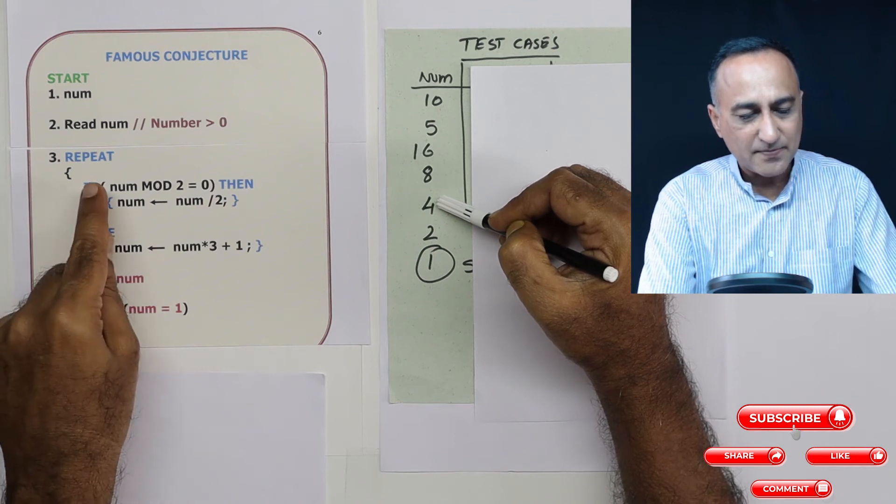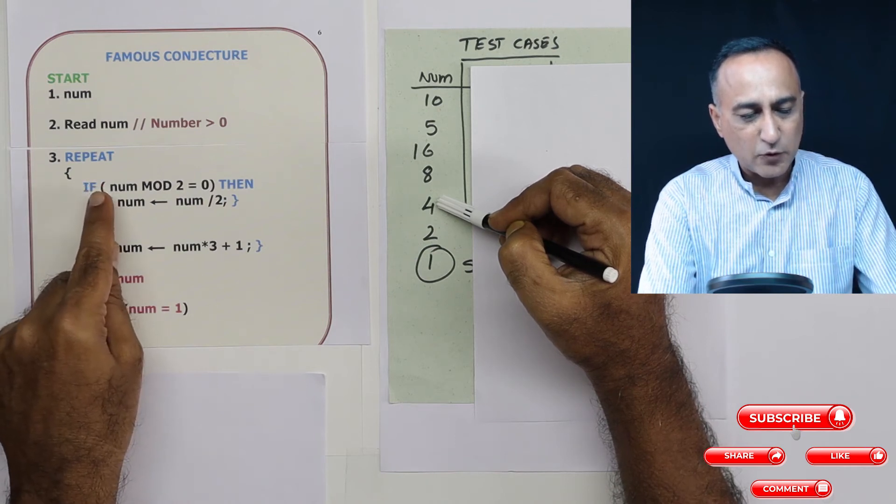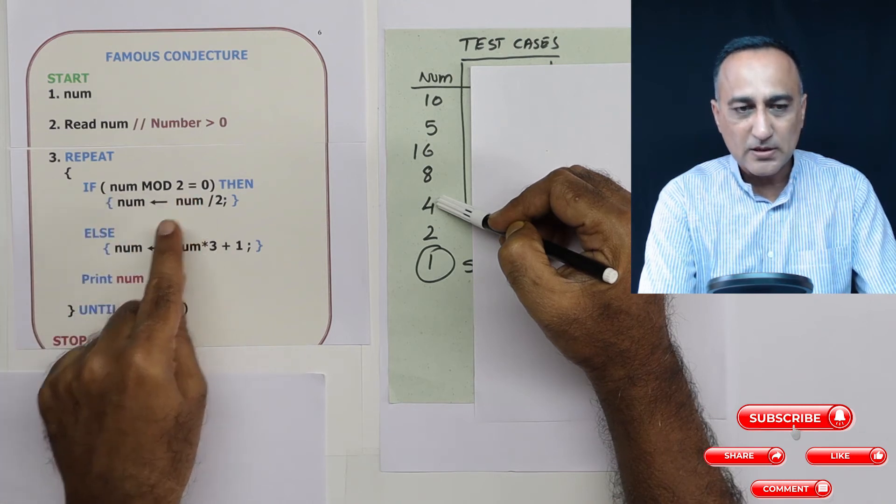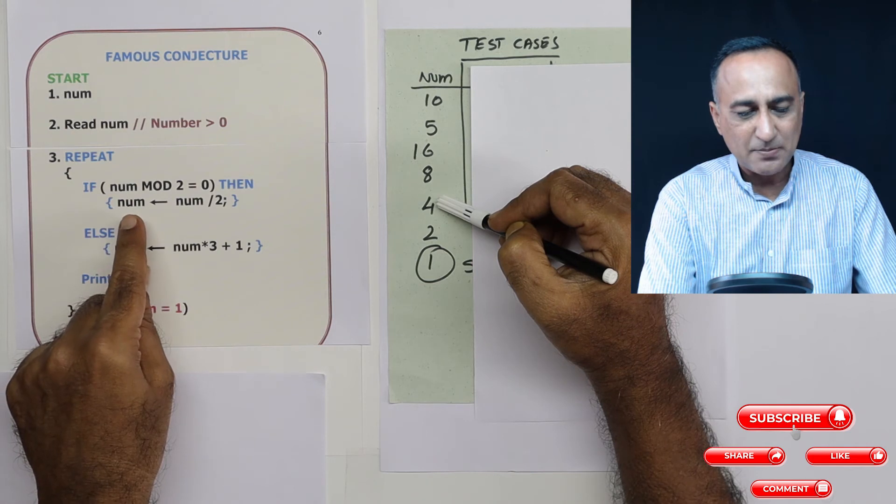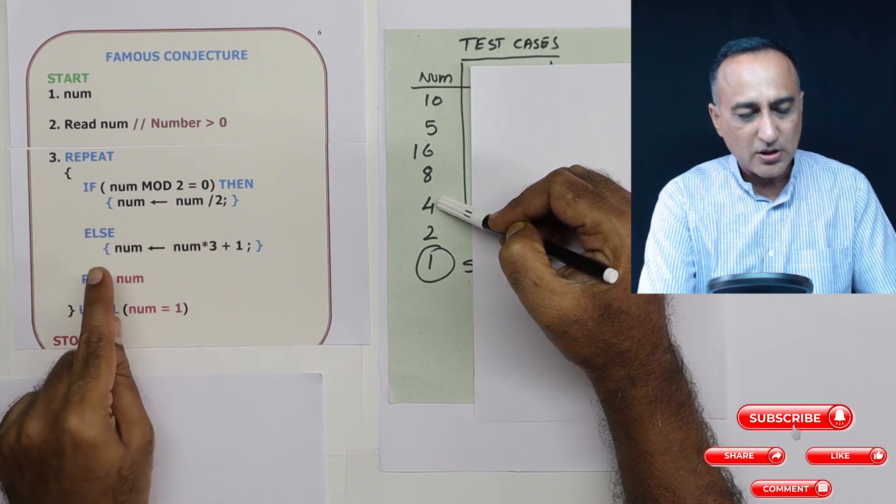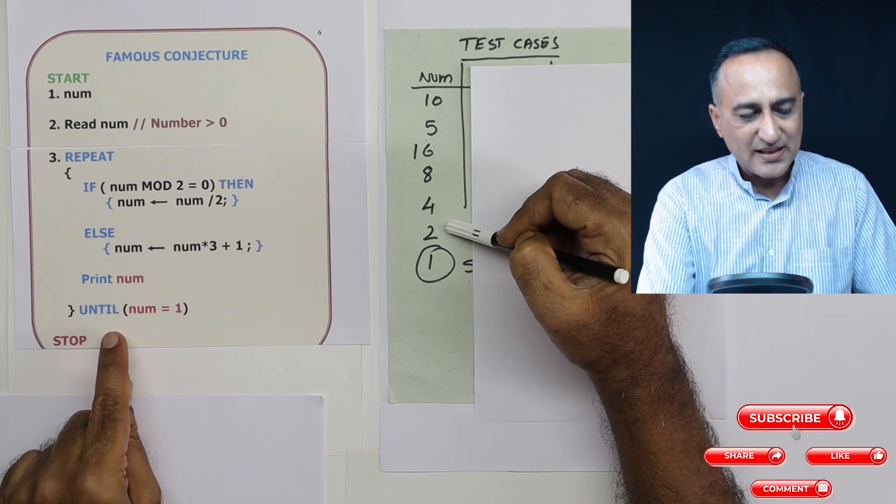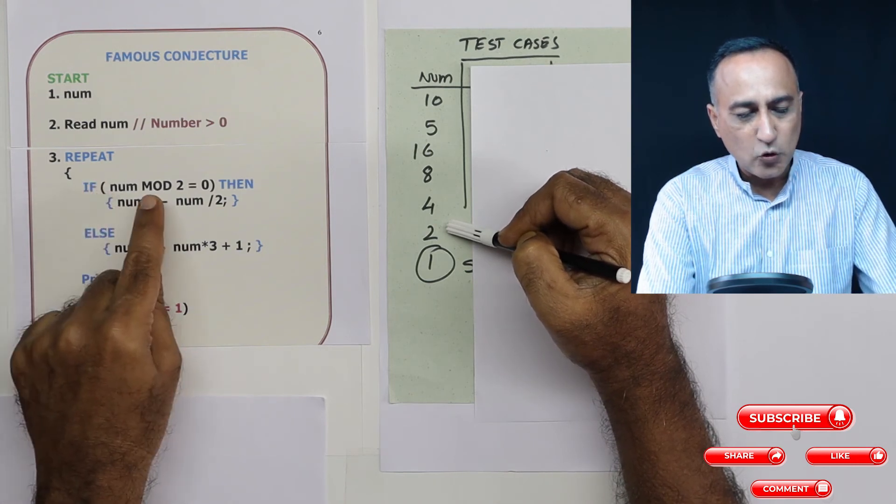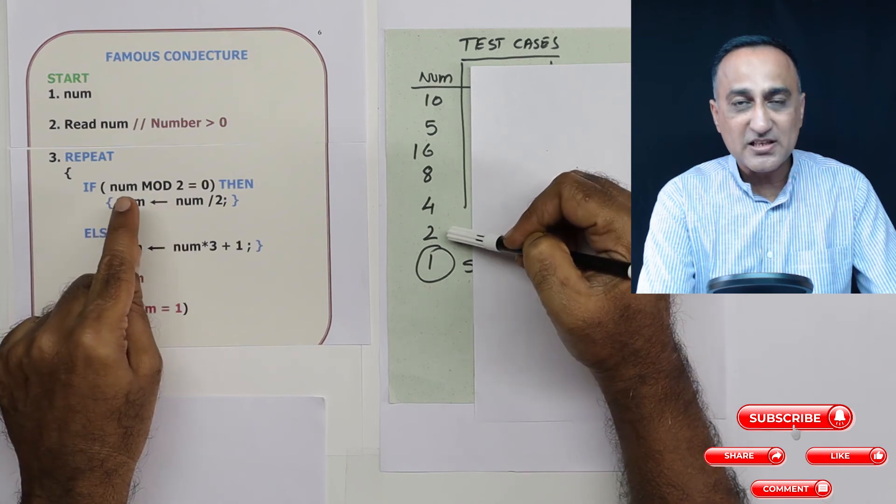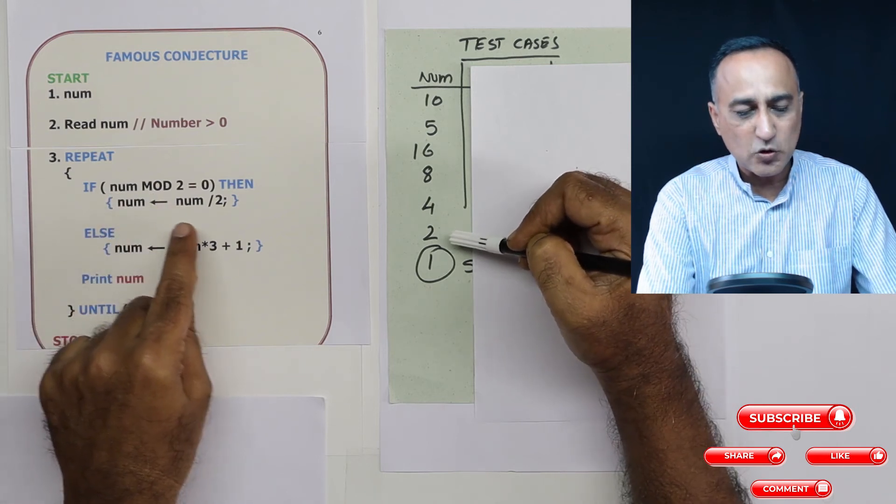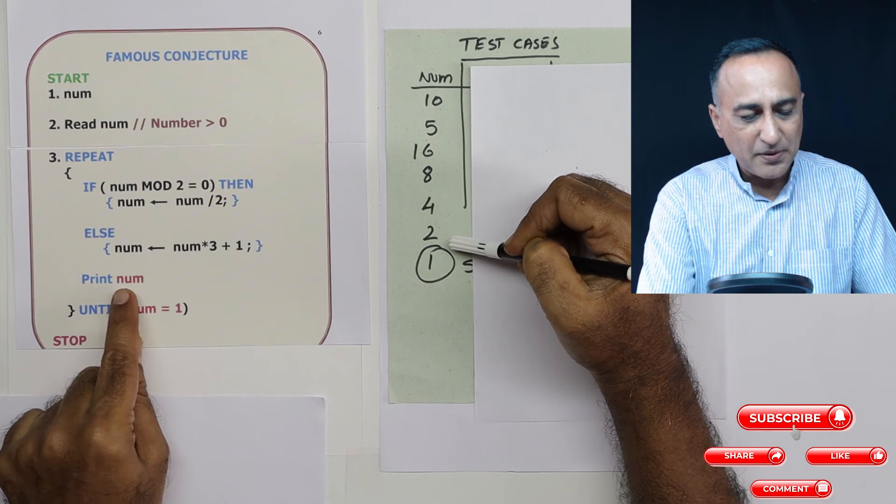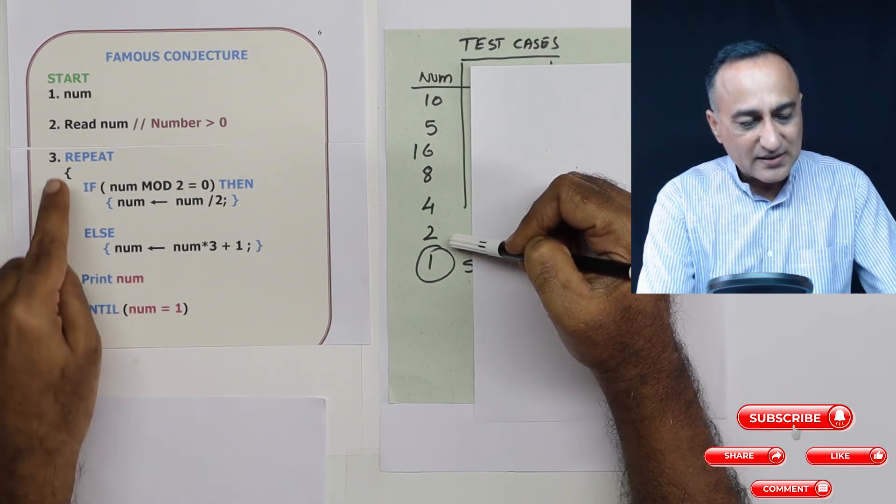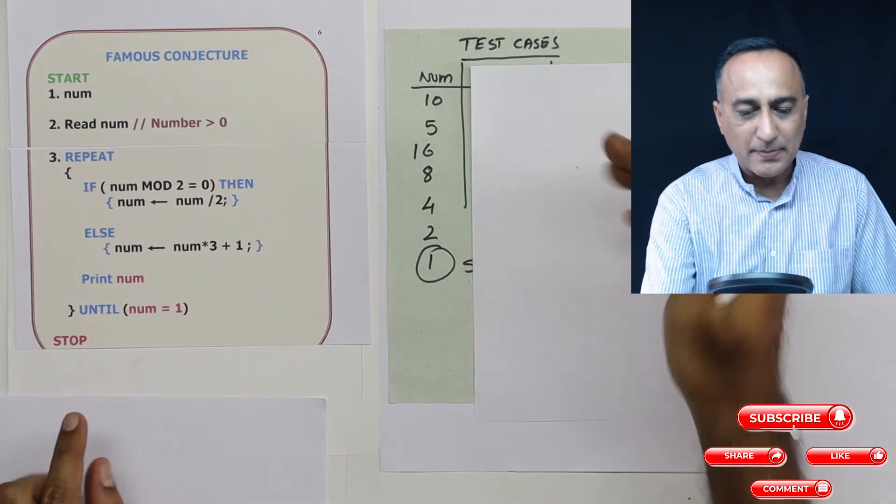Then I come back here. Now number is 4. 4 is still even, number 4 mod 2 is 0. So number is 4 upon 2 is 2. So number is 2, so I am going to print 2. Then 2 is not still equal to 1, so I come here. 2 mod 2 is 0 because it's an even number. Number is 2 upon 2 is 1. I print number is 1. Now since 1 is equal to 1, this condition fails and it will come and stop.